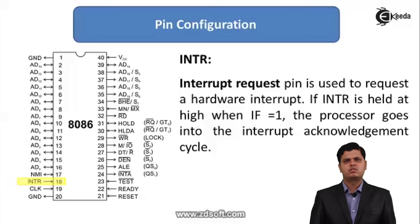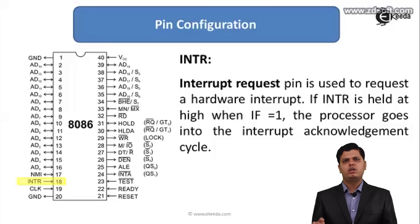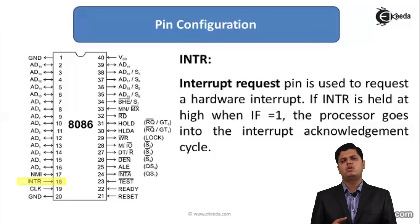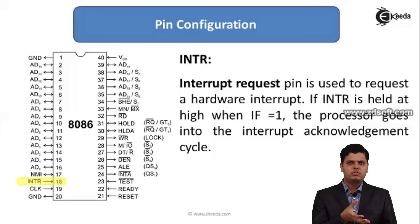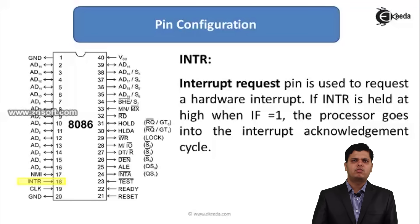The next pin is the interrupt request — the INTR line — which is an active high input signal. The INTR pin is used to request a hardware interrupt. Whenever any hardware connected in the system sends its request to the INTR pin, if the INTR pin is high and the interrupt flag in the flag register is 1, the processor goes into the interrupt acknowledge cycle and gives service to the respective device.